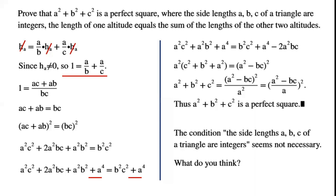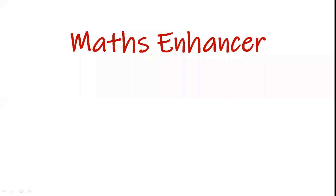The condition that side lengths a, b, c of a triangle are integers seems not necessary. What do you think?